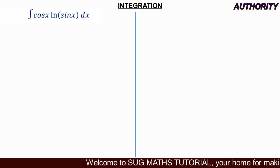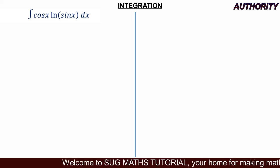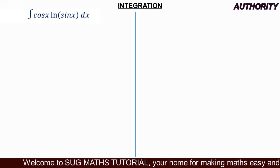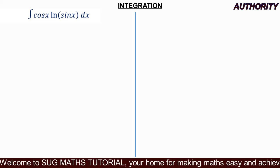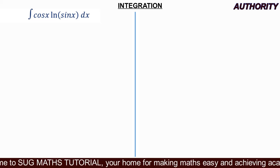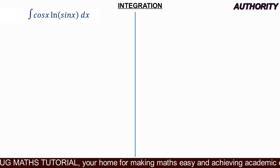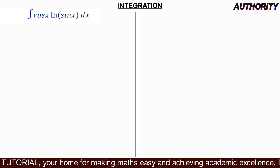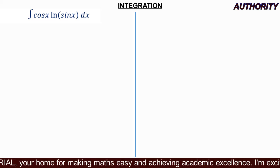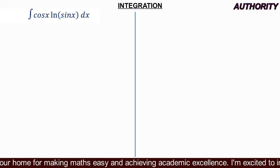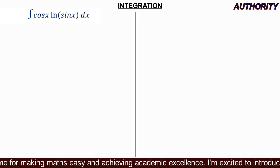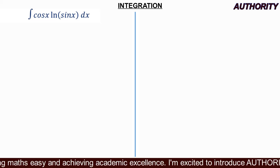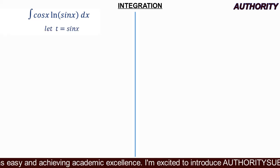We are asked to evaluate this integral of cos(x)·ln(sin(x))dx. We are going to use integration by substitution before integration by parts. We are not going to use integration by parts directly — we are going to simplify it first.